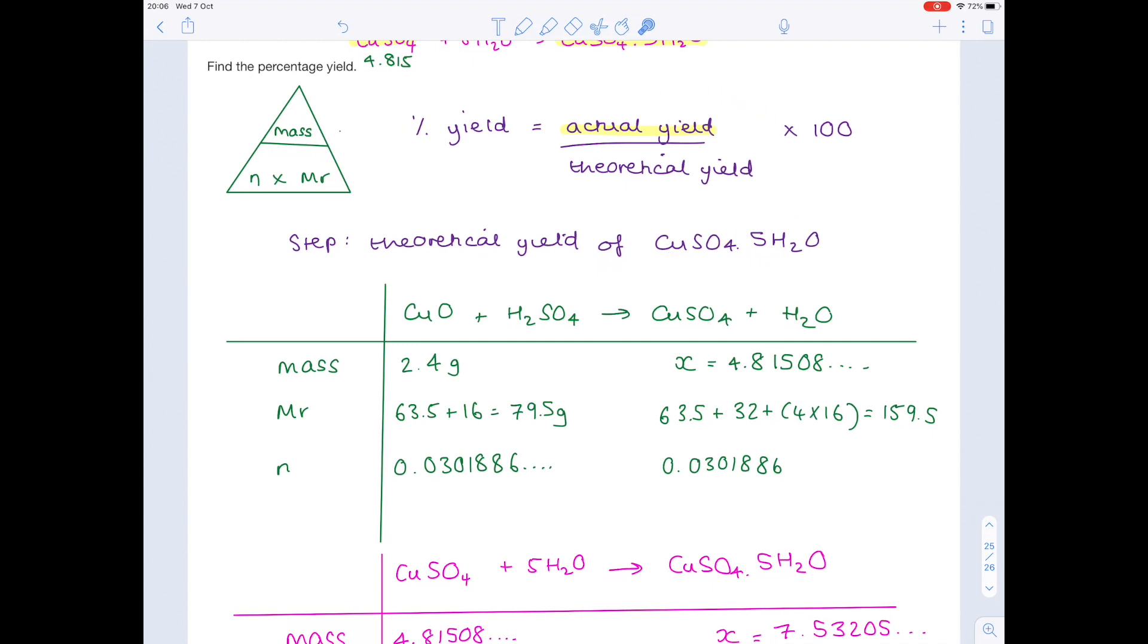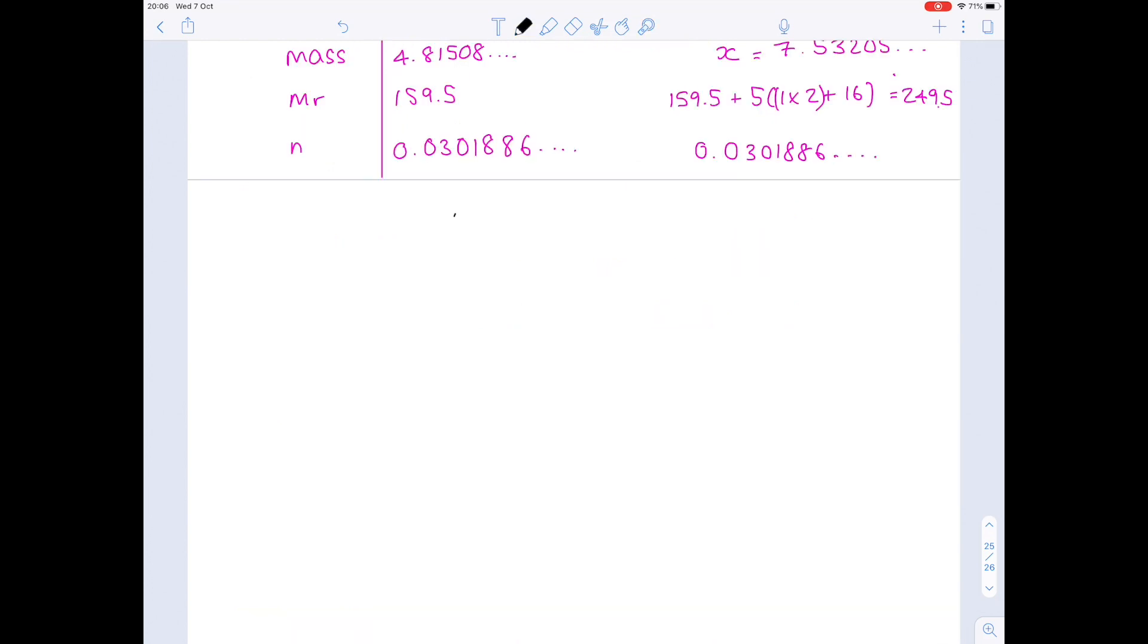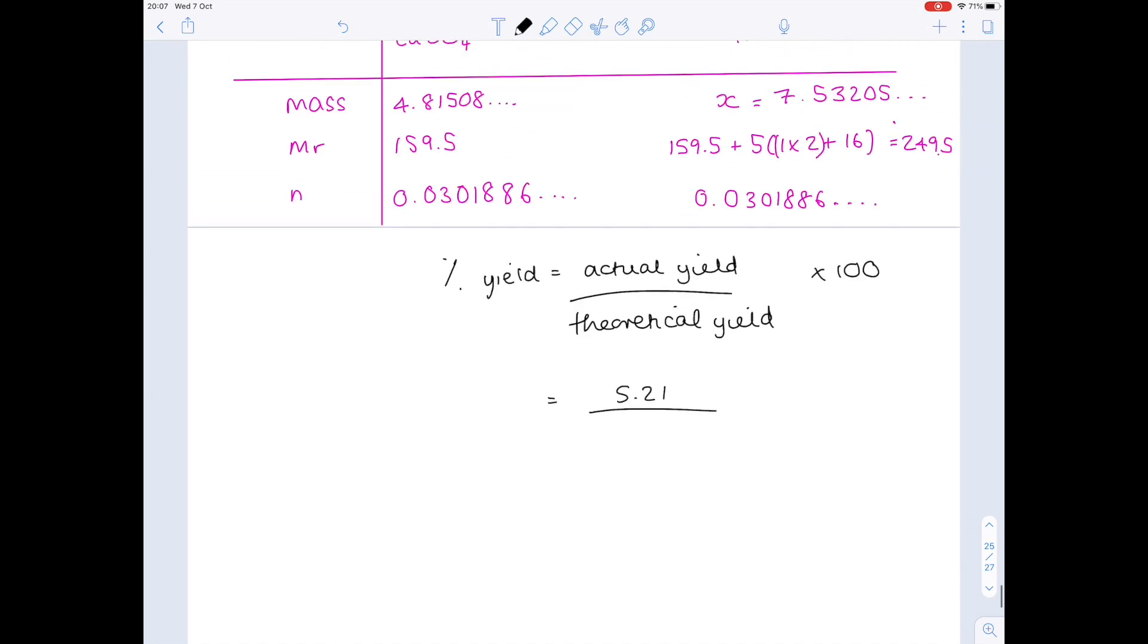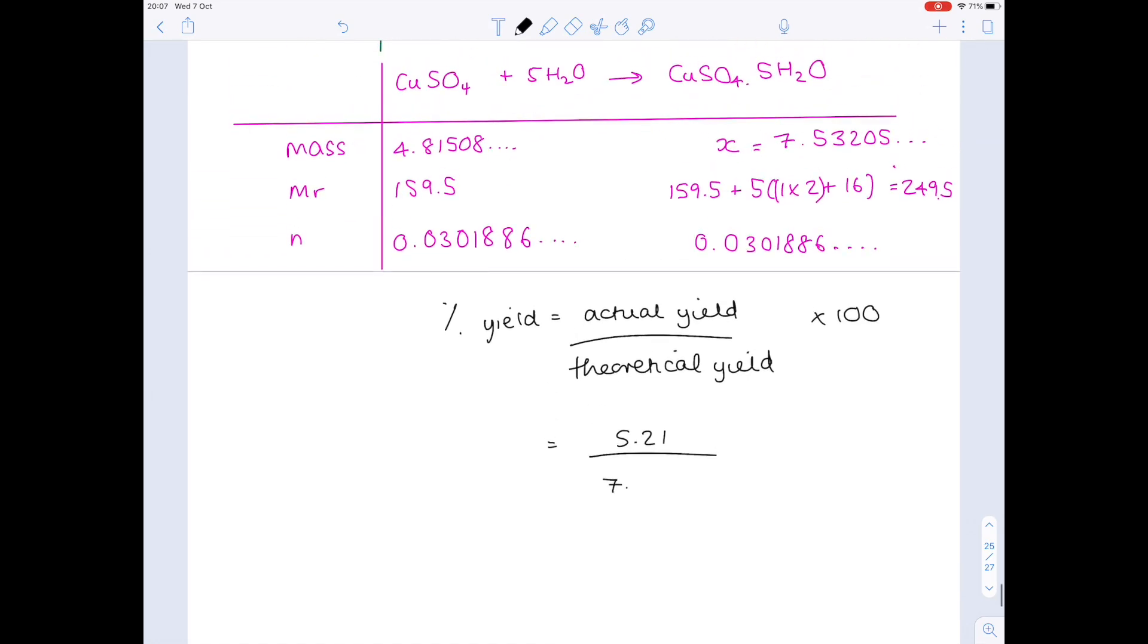So I'm going to rewrite that equation. The actual yield was given in the question, which was 5.21. Our theoretical yield we've just calculated as being 7.53205. Multiply that by 100, and you get a final percentage yield of 69.2% to three significant figures. And that is your final answer.